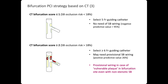If the CT-BIPCAN score is 0 or 1, the risk of side-branch occlusion is not so high, so you can use a 5 French guiding catheter and there will be no need for side-branch wiring. If the CT-BIPCAN score is 2 or higher, you may need a 6 French guiding catheter and may also need provisional side-branch wiring, even if the side branch is not so amenable to stenting.